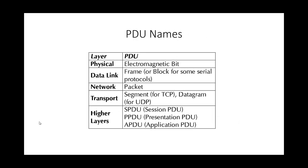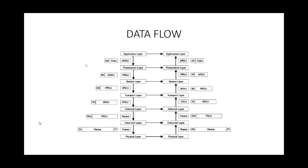The names of PDUs for each layer vary according to the protocol used. At the physical layer the PDU is an electromagnetic bit. At the data link layer it is a frame. At the network layer it is a packet. At the transport layer it is a segment for TCP or a datagram for UDP. The higher layers use session PDU, presentation PDU, and application PDU. You must remember these for the exam — knowing which layer uses a frame, packet, and so forth.